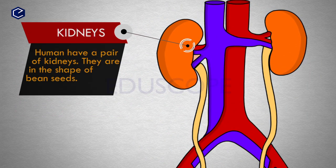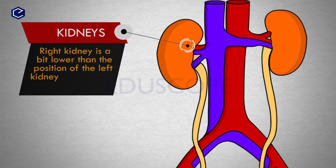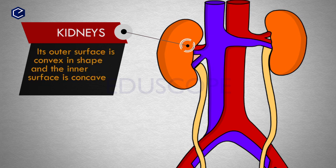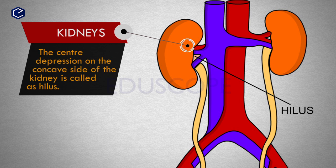Humans have a pair of kidneys, which are bean-seed shaped. The right kidney is positioned slightly lower than the left kidney. The length of a kidney is 10 centimeters, width 5 to 6 centimeters, and thickness is about 4 centimeters. Its outer surface is convex and the inner surface is concave. The central depression on the concave side is called the hilum.